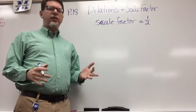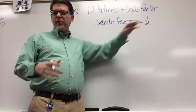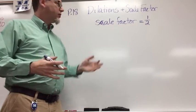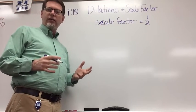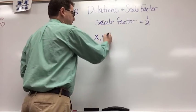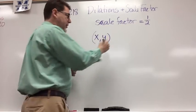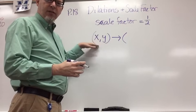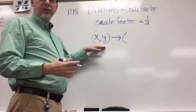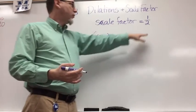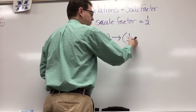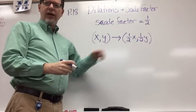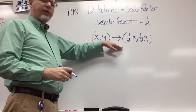For the next example, let's say our scale factor is 1/2. I'm creating a reduction, half the size of the original. To create my algebraic phrase, I start with (x, y), then the arrow for dilation. What do I do to each number in my ordered pair? I multiply it by the scale factor, which is 1/2. So I take (1/2x, 1/2y), and that is my algebraic representation of my dilation.